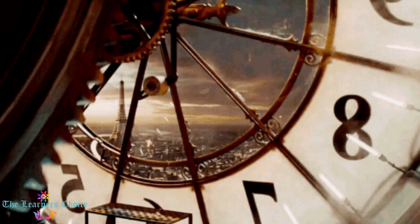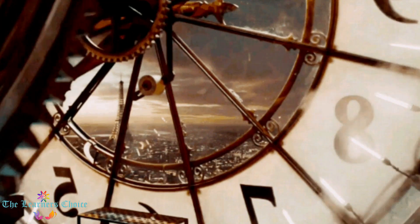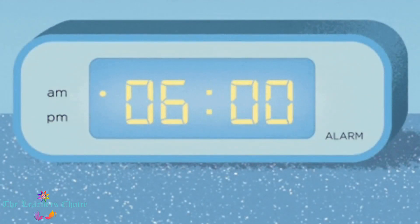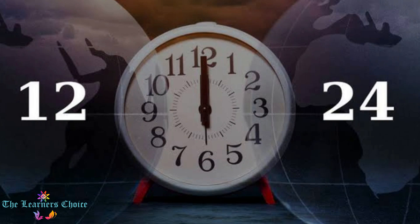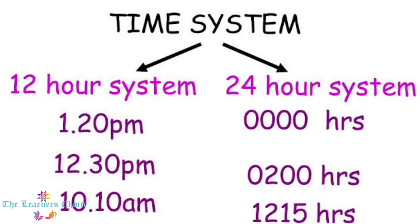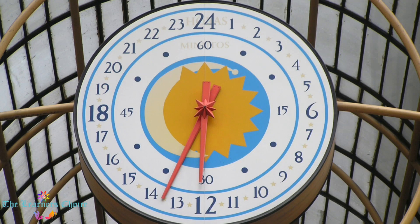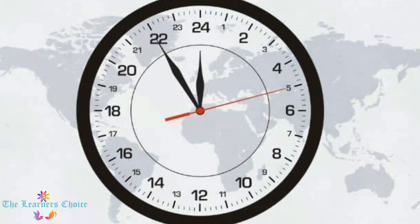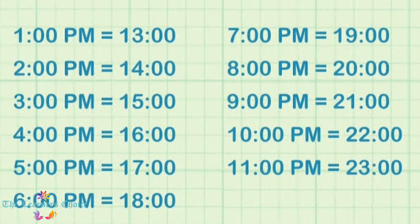To understand the concept of AM and PM, it is important to know about the formats of clocks. There are basically two formats of clock: one is the 12-hour clock format and another is the 24-hour clock format. Since a day is made up of 24 hours, it is easy to tell the time in 24-hour format without using any unit.